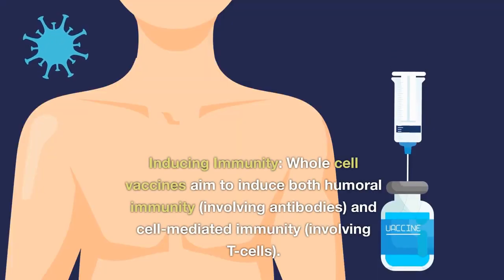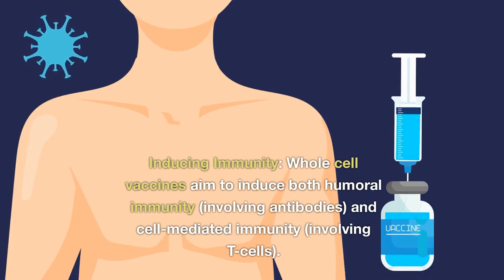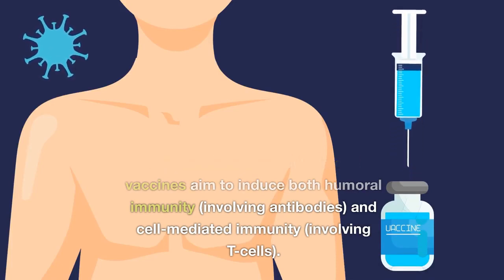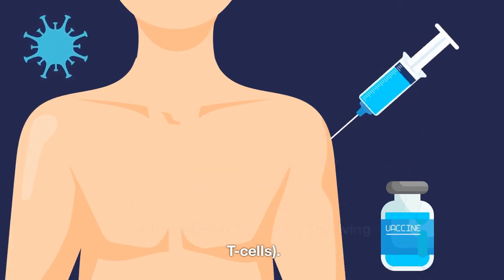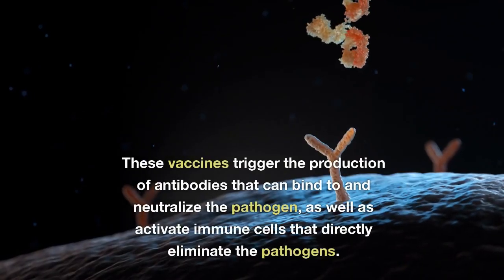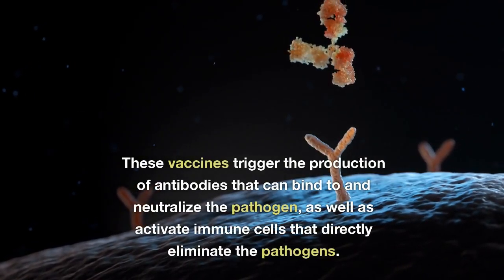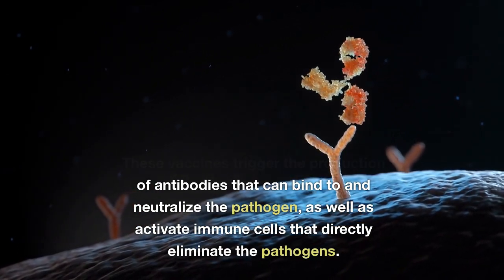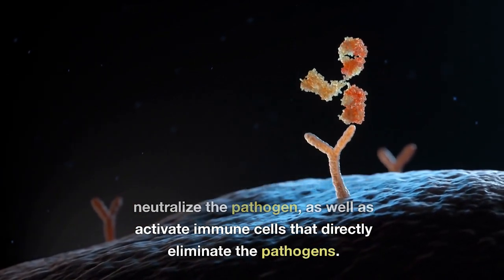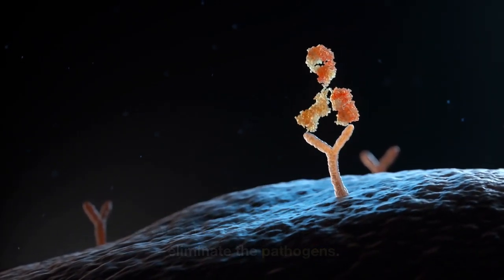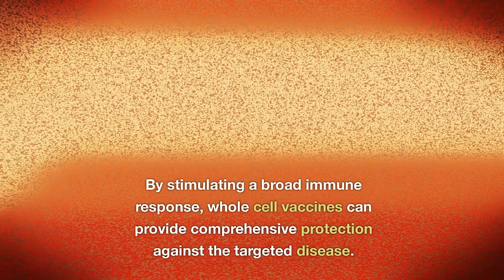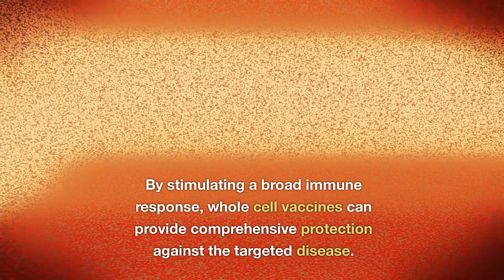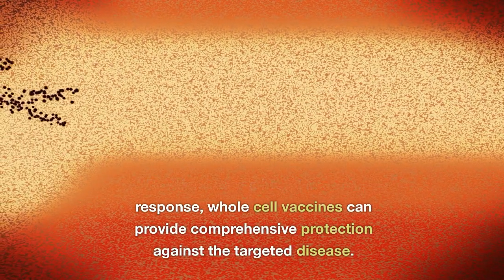Inducing immunity: whole cell vaccines aim to induce both humoral immunity, involving antibodies, and cell-mediated immunity, involving T cells. These vaccines trigger the production of antibodies that can bind to and neutralize the pathogen, as well as activate immune cells that directly eliminate the pathogens. By stimulating a broad immune response, whole cell vaccines can provide comprehensive protection against the targeted disease.